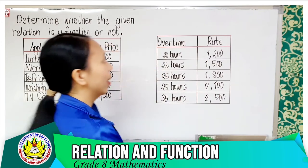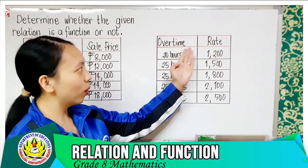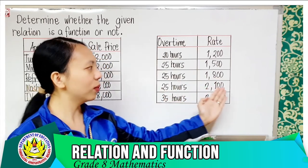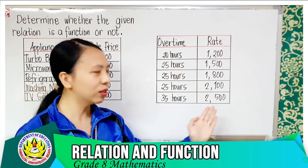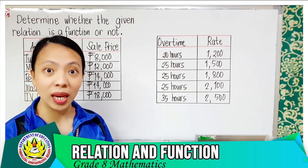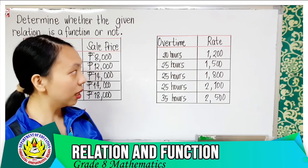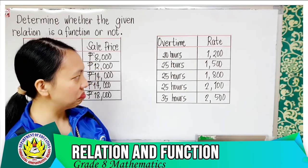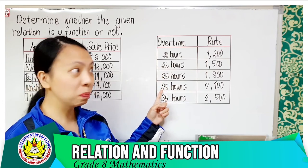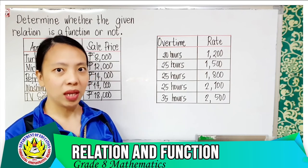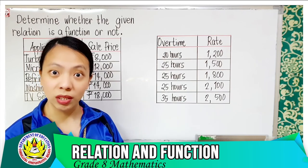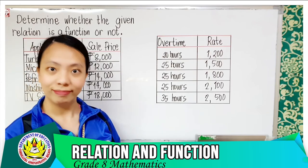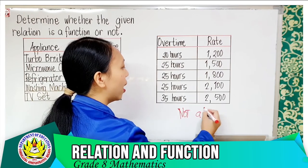Let's look at overtime rates: 20 hours → 1,200; 25 hours → 1,500; 25 hours → 1,800; 25 hours → 2,100; and 35 hours → 2,500. Is there an element in the domain which is repeated? Yes — 25 hours appears multiple times. The same overtime hours but different rates, perhaps due to different positions or companies. Therefore, this is not a function.